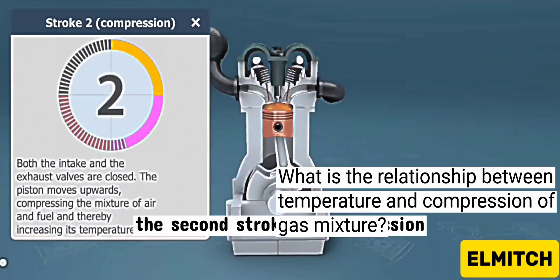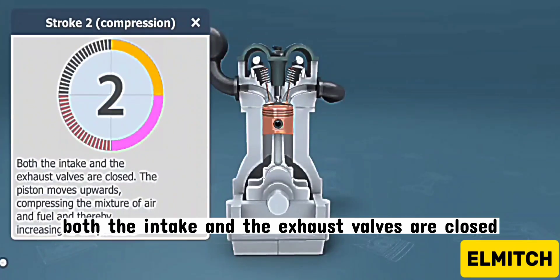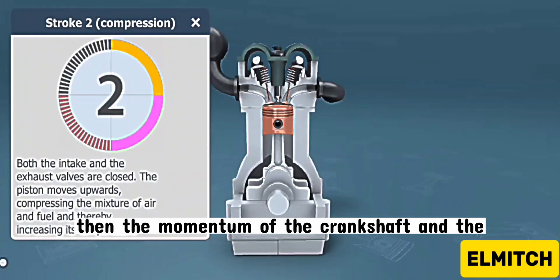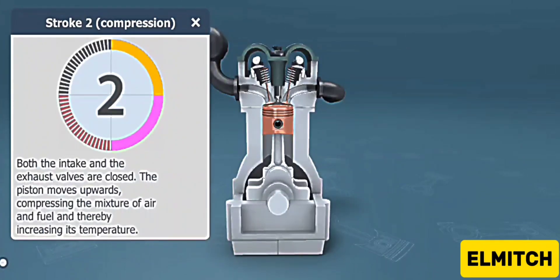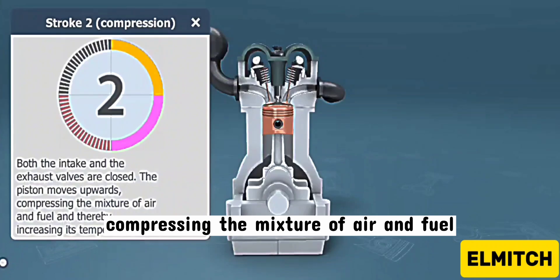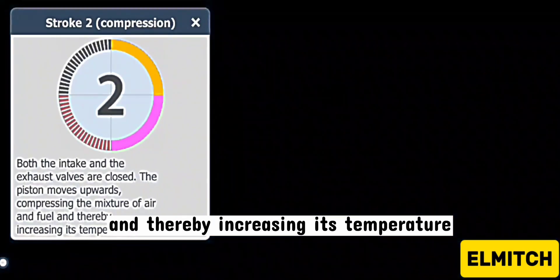The second stroke is compression. Both the intake and the exhaust valves are closed. The momentum of the crankshaft and the counterweight causes the piston to move upwards, compressing the mixture of air and fuel, and thereby increasing its temperature.